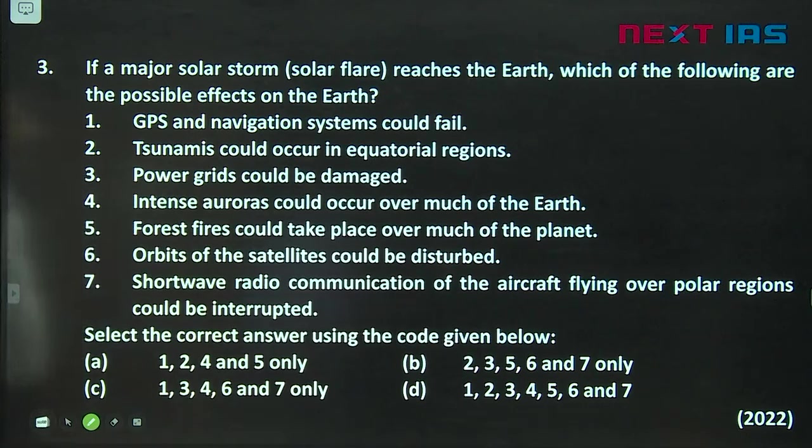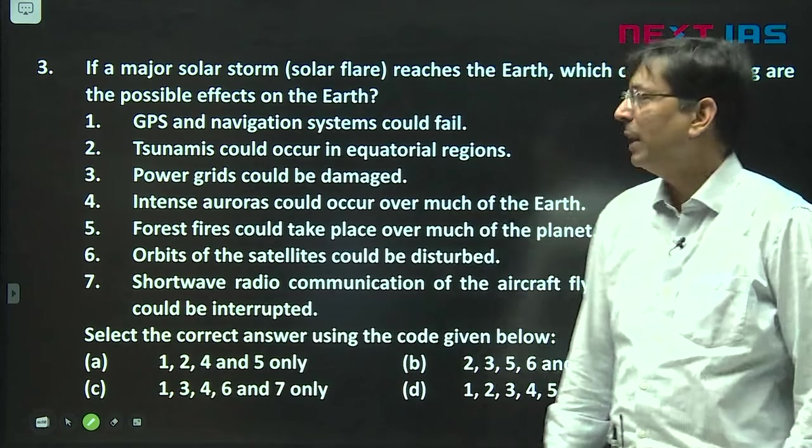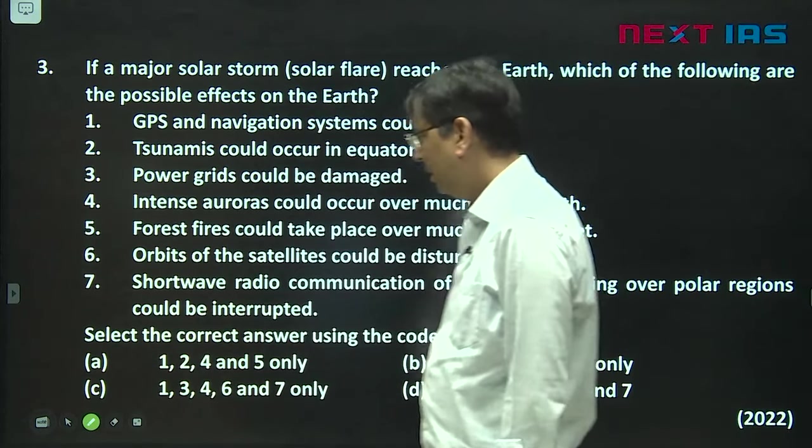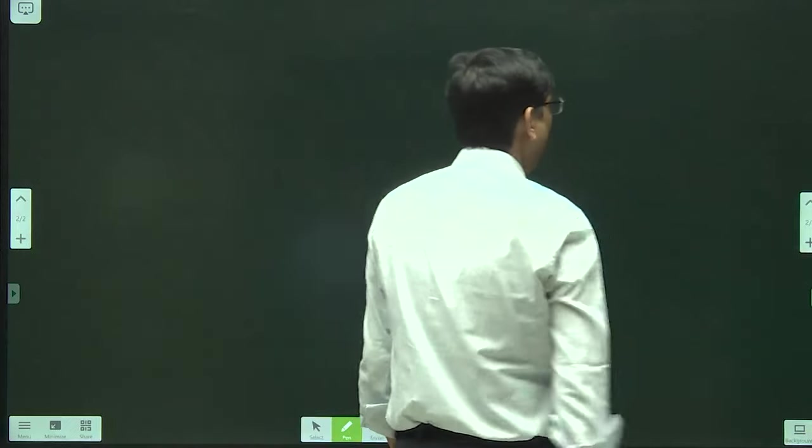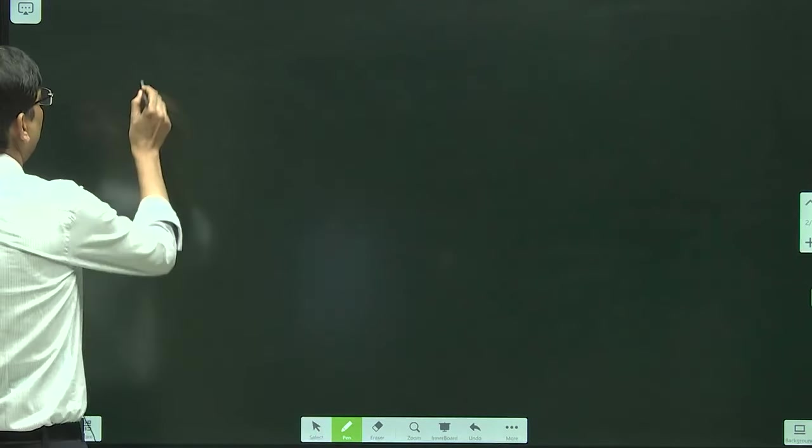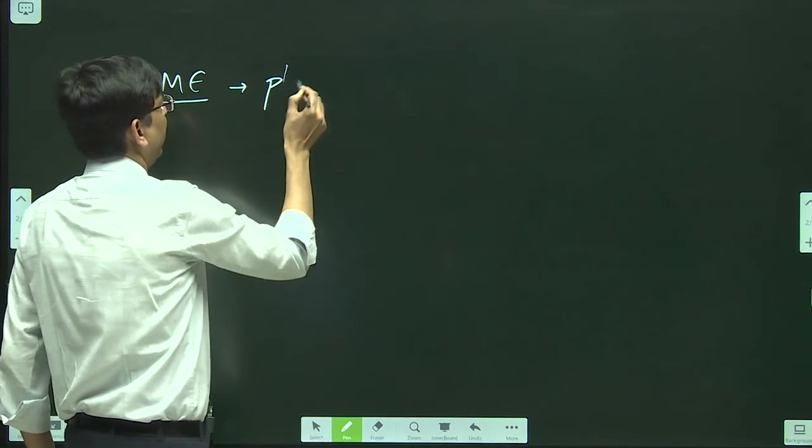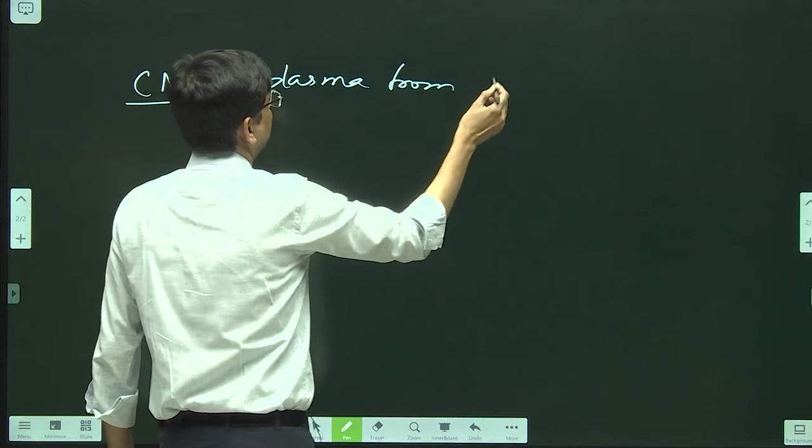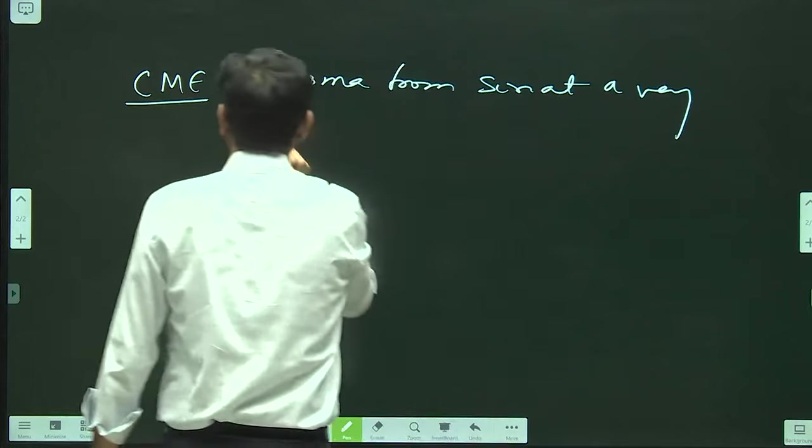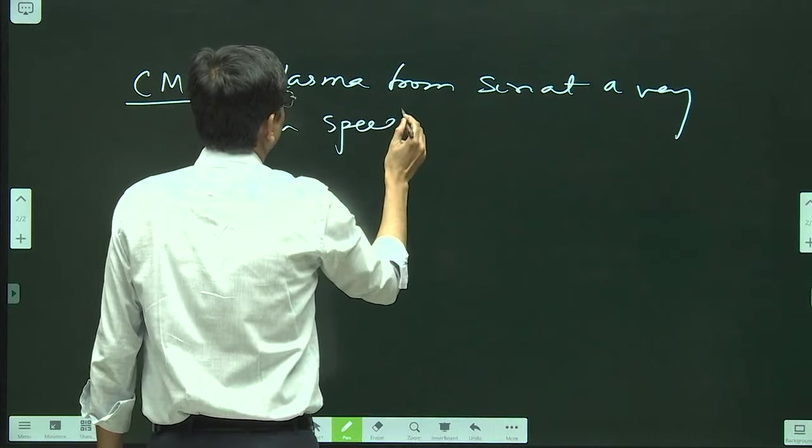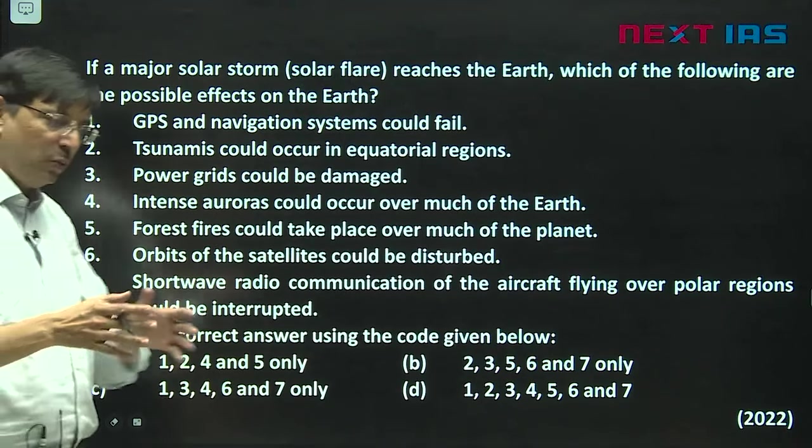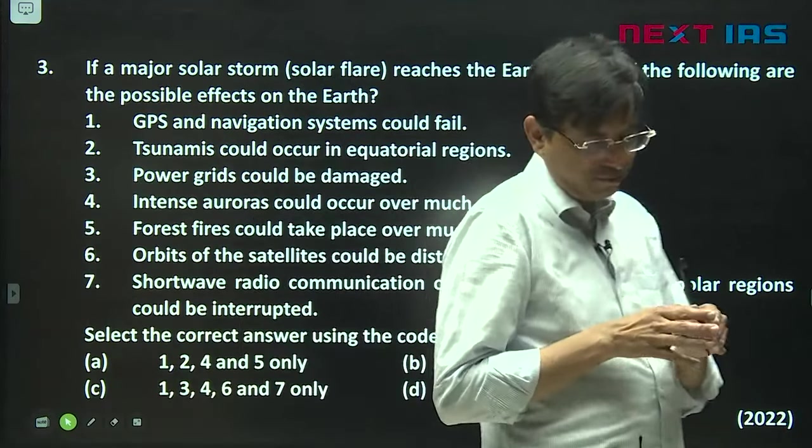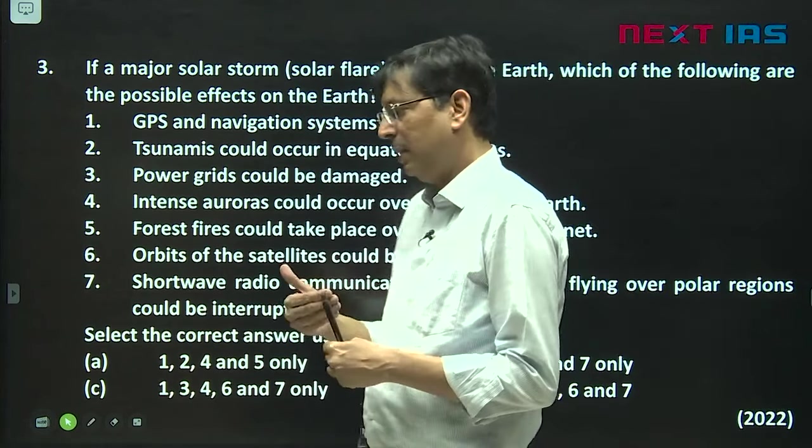If a major solar storm reaches the earth, which of the following are the possible effects on the earth. This is about geomagnetic storm. We need to understand certain things about this. There is coronal mass ejection. Coronal mass ejection is the release of plasma from sun at a very high speed. When it comes towards the earth, it is going to cause certain effects.